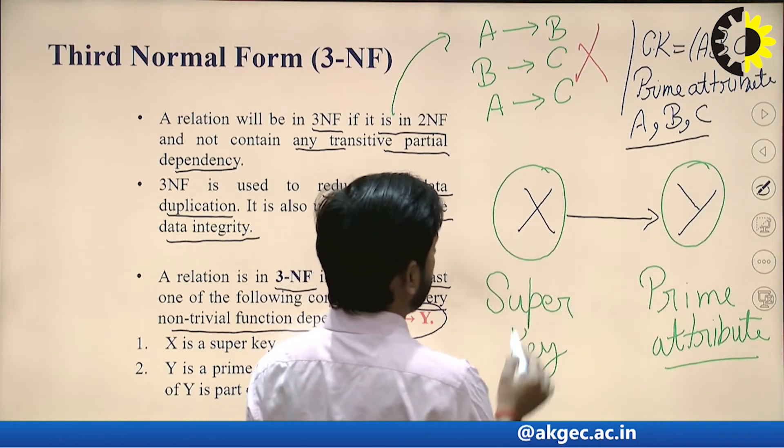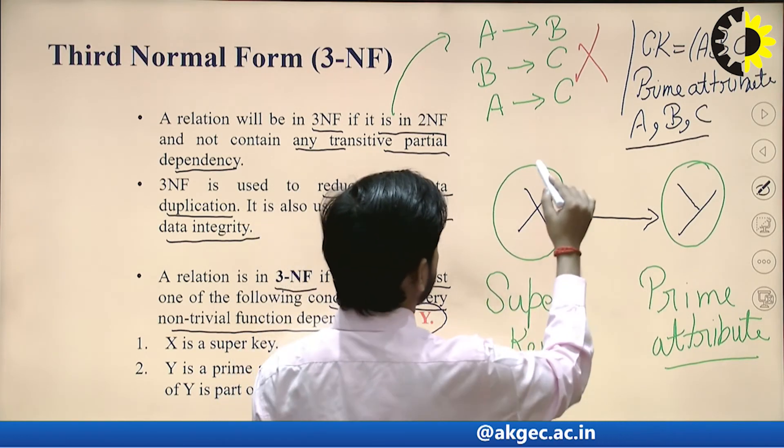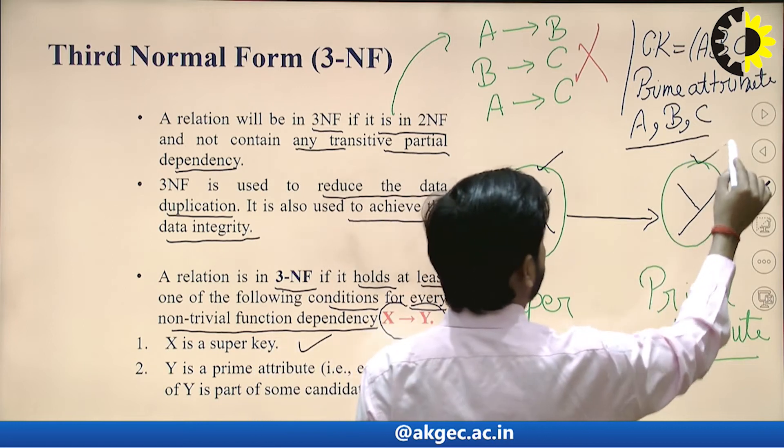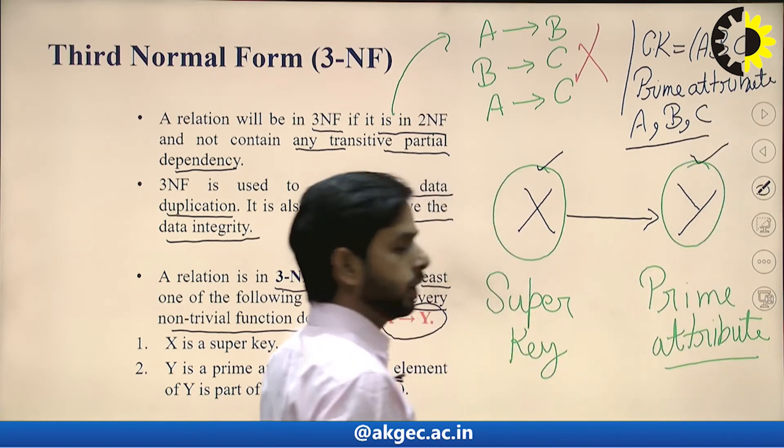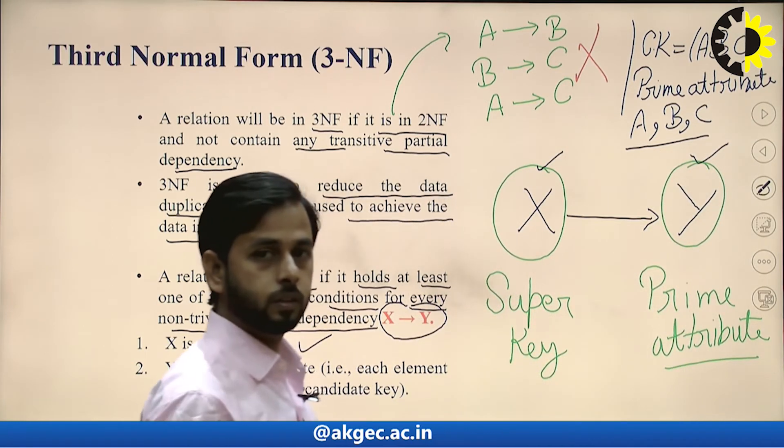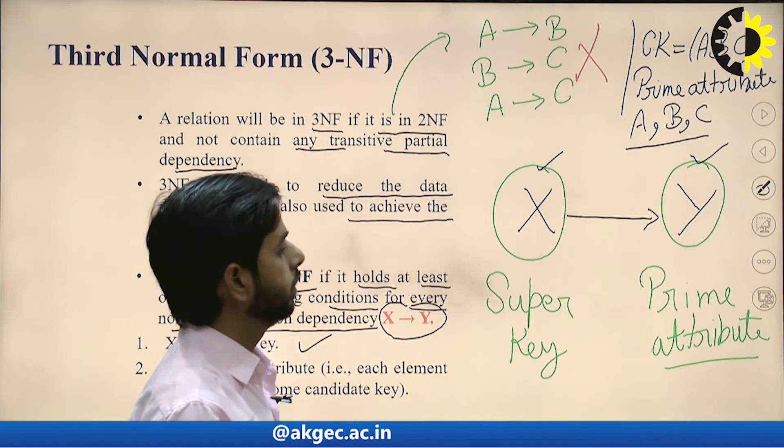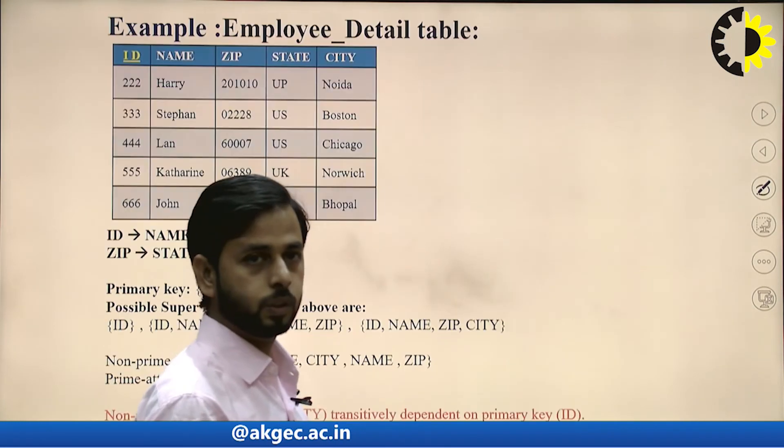For Third Normal Form, X must be a super key and Y must be a prime attribute.